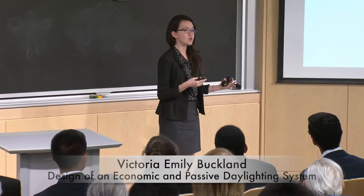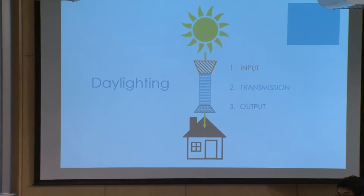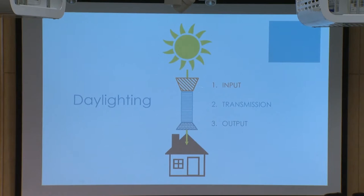Daylighting systems are comprised of three components mainly. First, you have input, which is where you collect daylight. Then you have transmission, where you guide the light. And then you have output, where the light diffuses and illuminates your room.